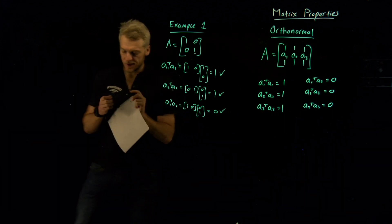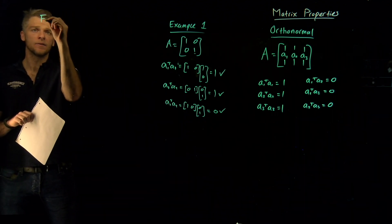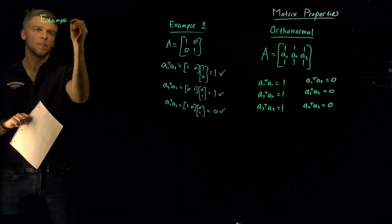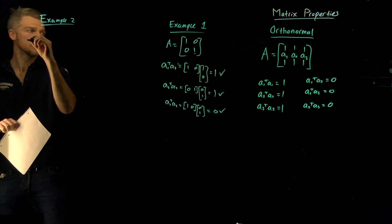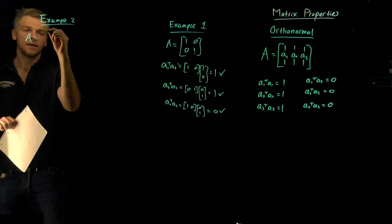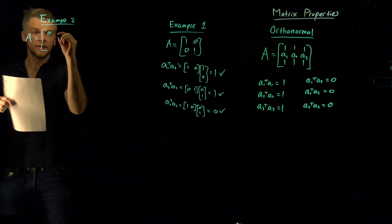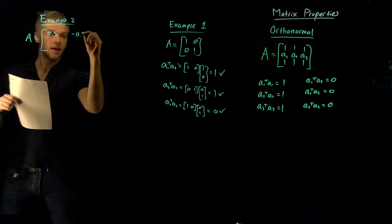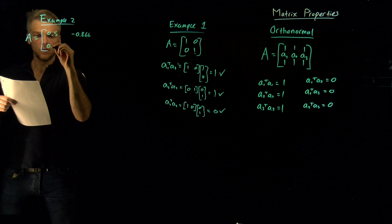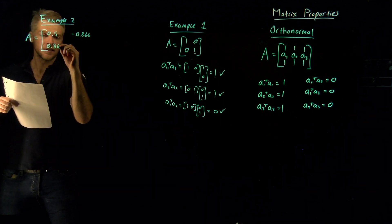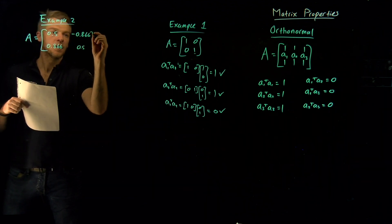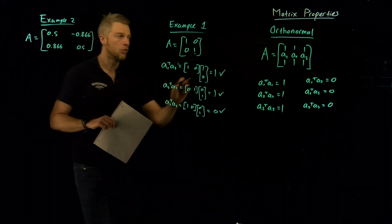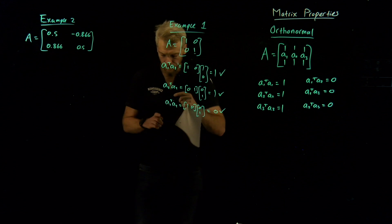I'll cover one other example. Example 2: I'll also make it a 2 by 2 square matrix. Let's say A equals [[0.5, -0.866], [0.866, 0.5]]. I won't rigorously prove it like I've done here, but this is another example of an orthonormal matrix.